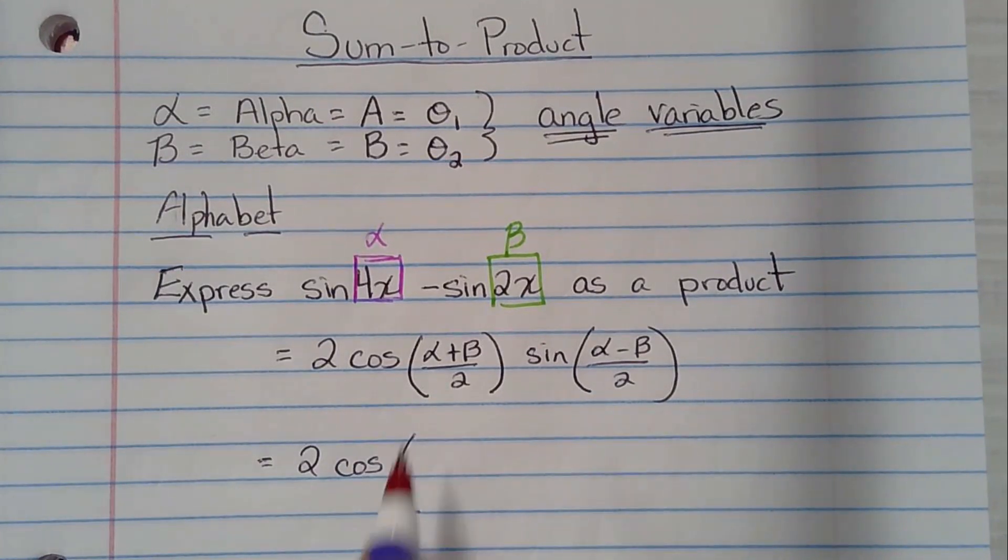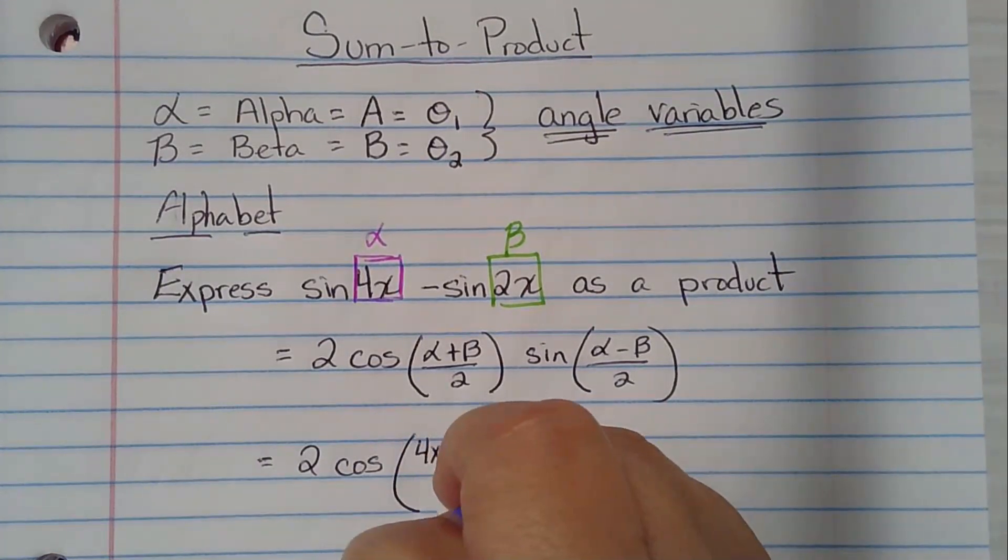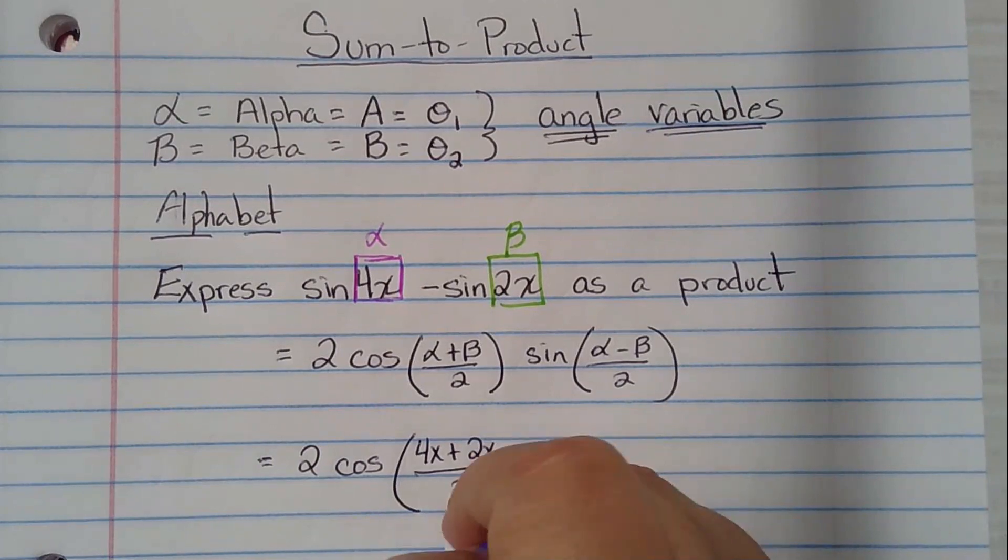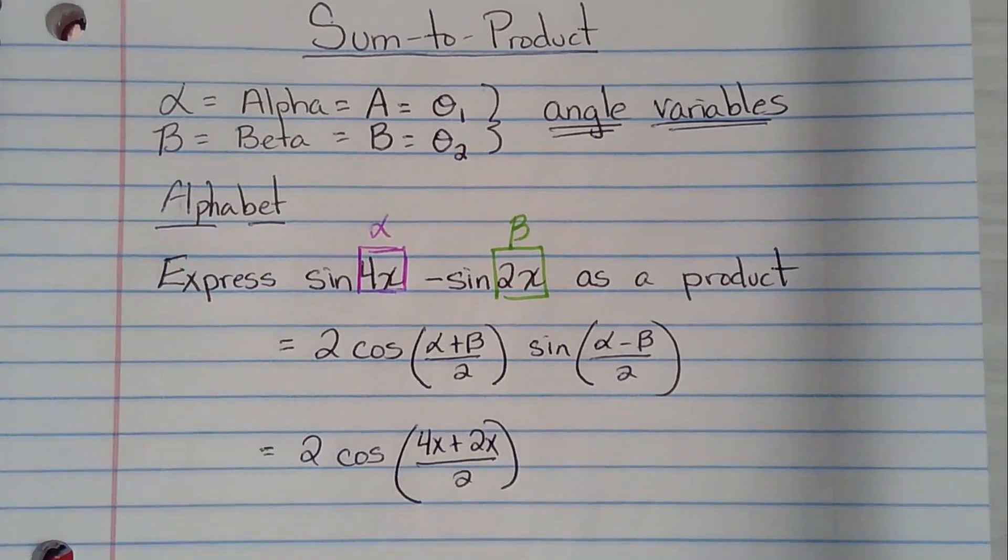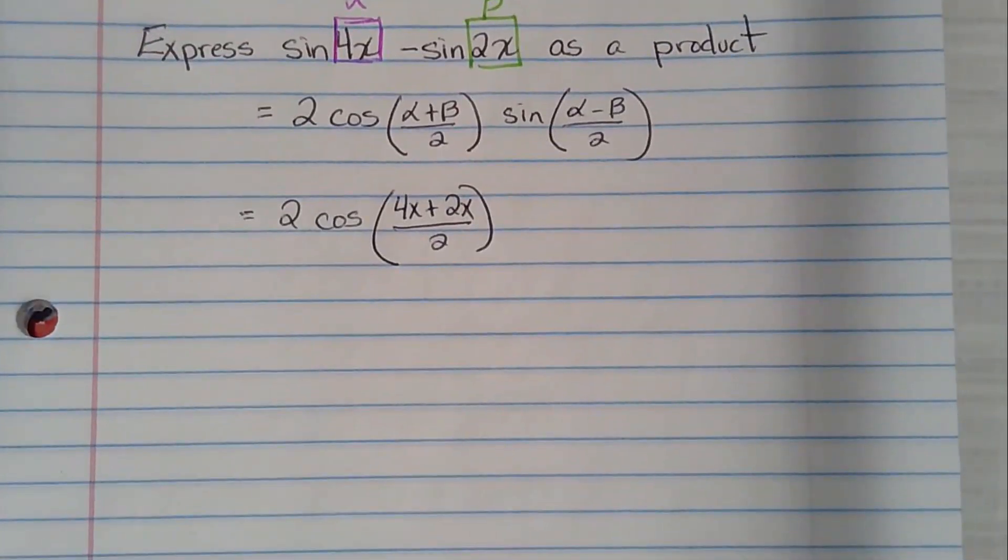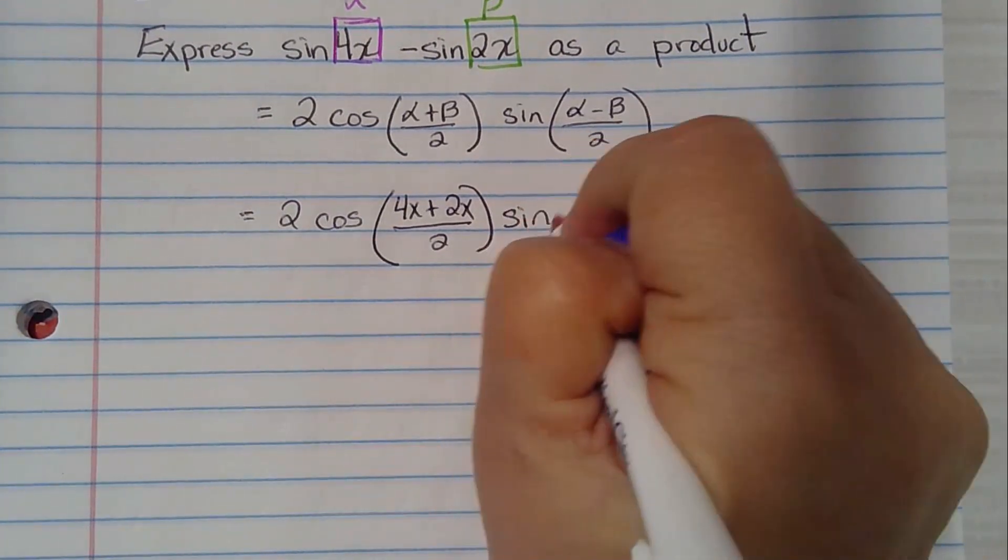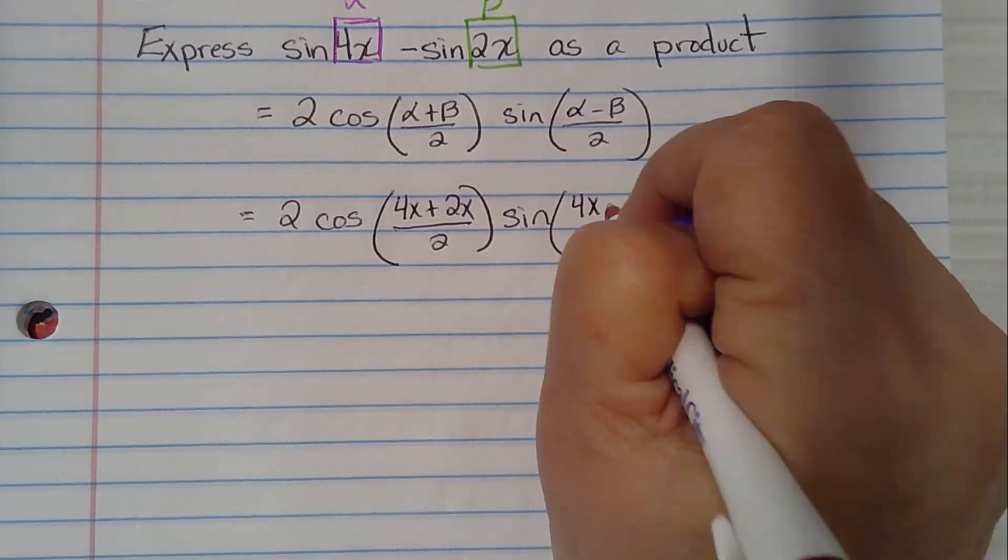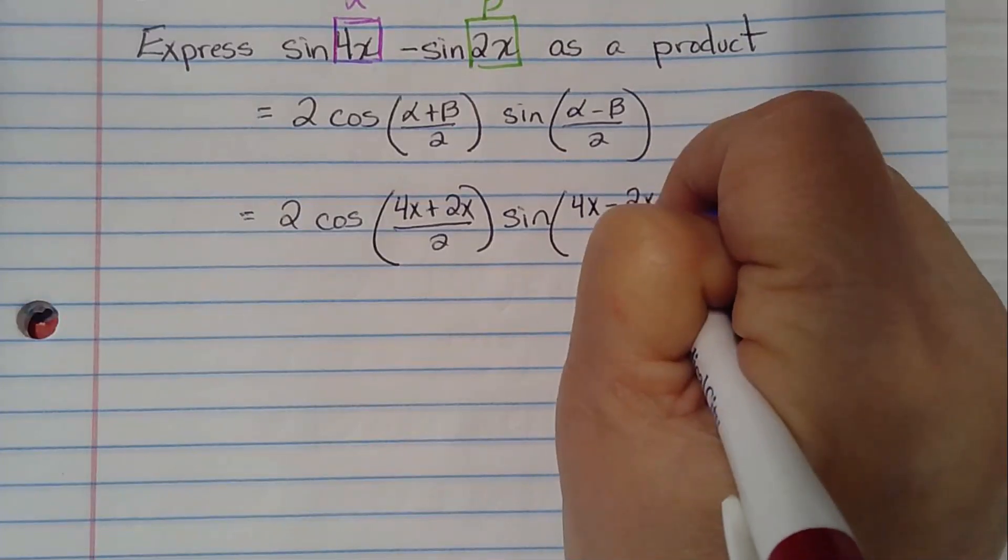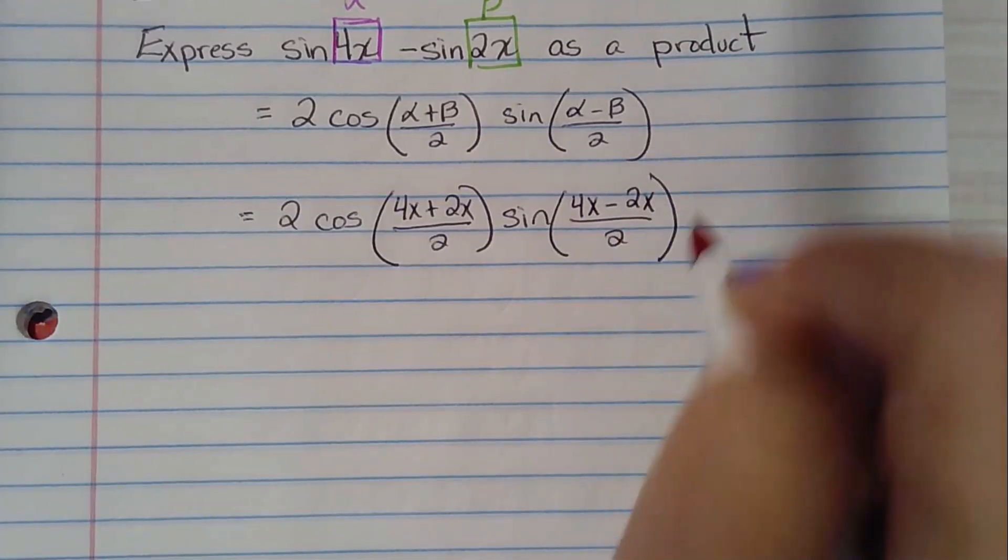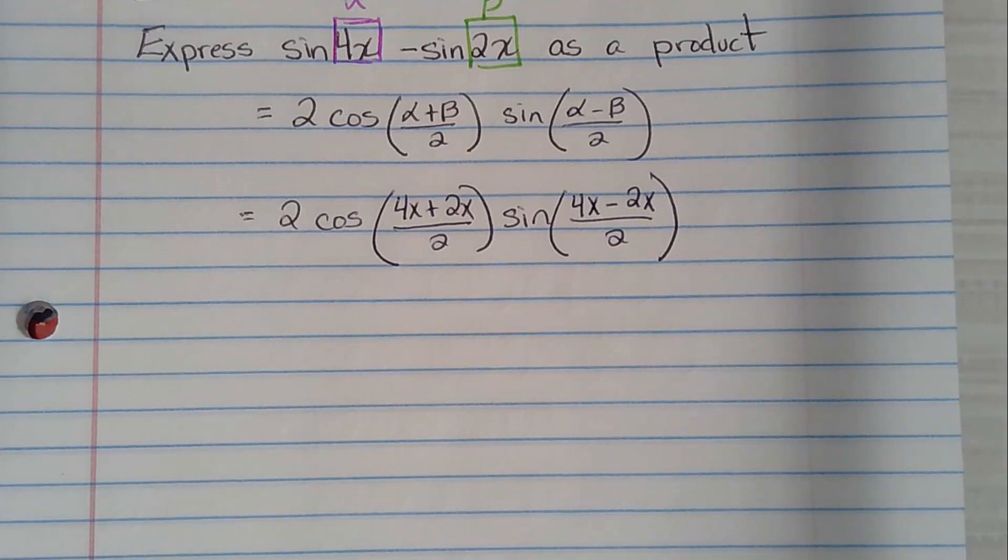So alpha gets a 4x and beta gets a 2x. And then we put a sine. Alpha gets a 4x minus beta gets a 2x over 2. So we substituted our values in place of our variables.